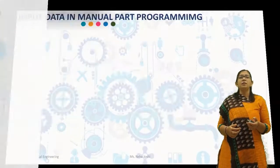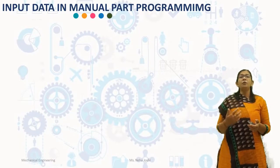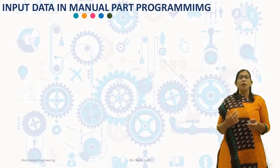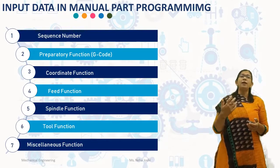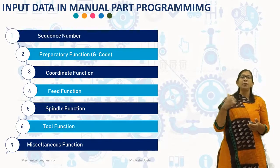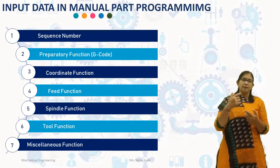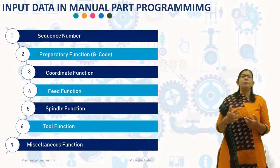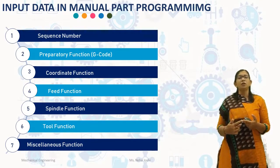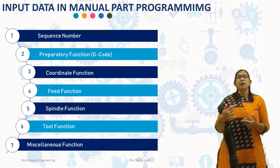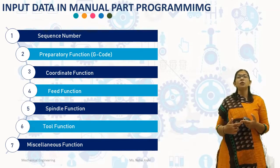We will discuss different input data in manual part programming. Generally, the input data in manual part programming includes: sequence number, preparatory functions, coordinate functions, speed functions, spindle speed functions, tool functions, and miscellaneous functions.